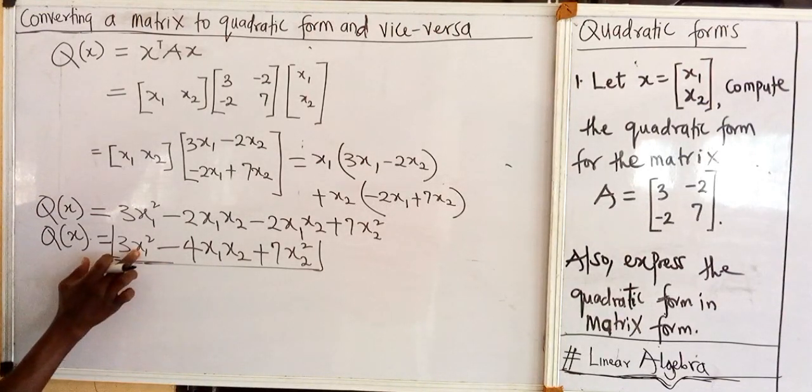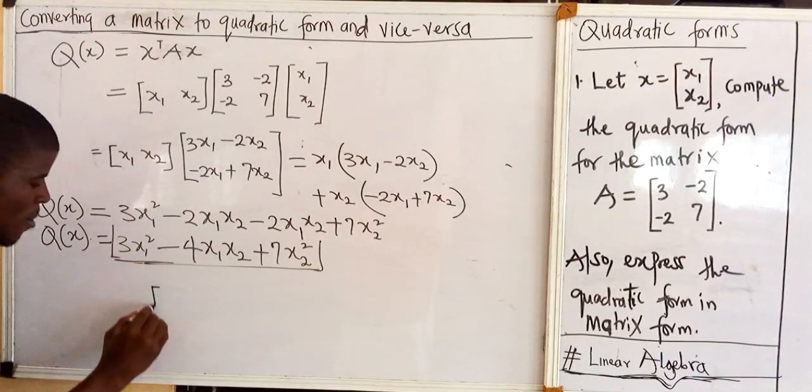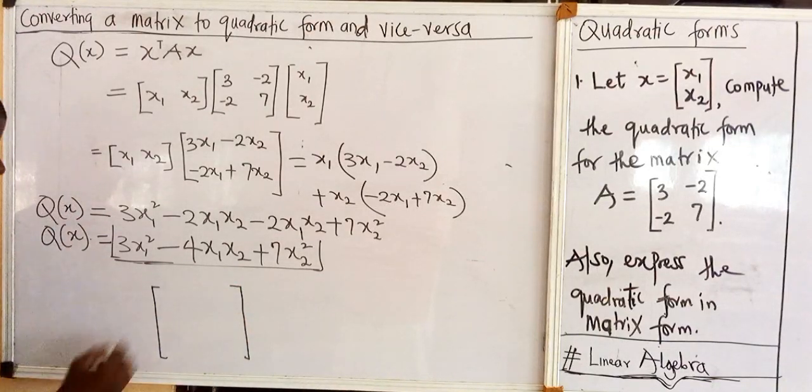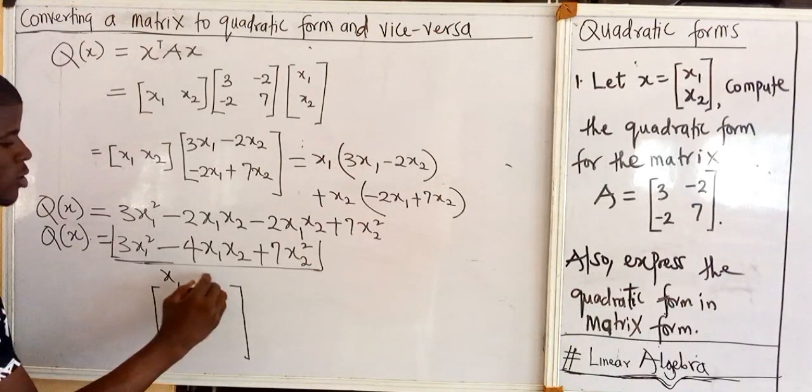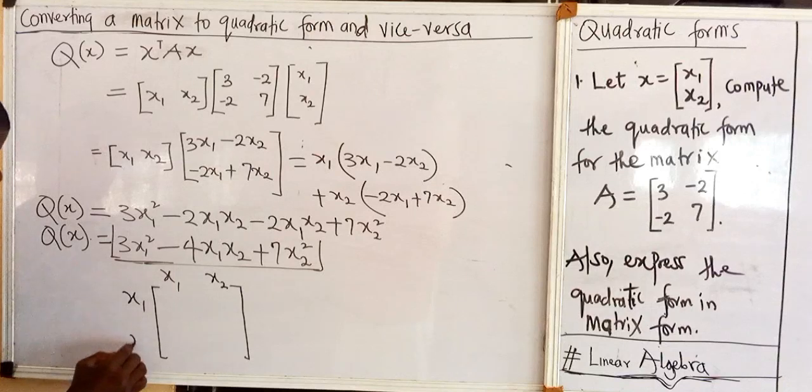We are dealing with two variables here, x1 x2, so our matrix will be a square matrix, that is a matrix that has equal number of rows and columns. So x1, this column is for x1, this column is for x2, this row is for x1, this row is x2.